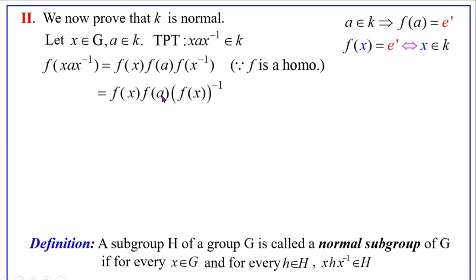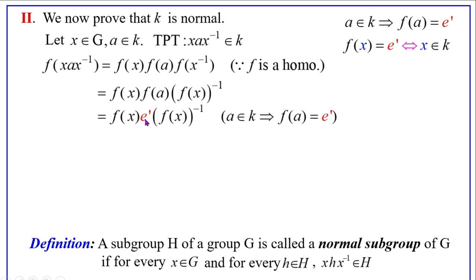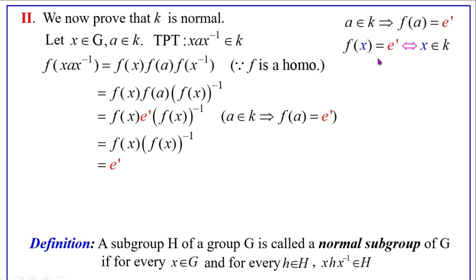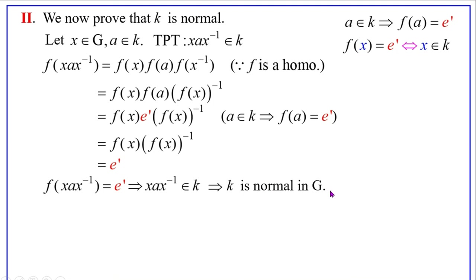Substituting F(A) equals E', we get F(X)·E'·(F(X))⁻¹. Multiplying any element by the identity gives the same element, so this equals F(X)·(F(X))⁻¹, which is of the form A·A⁻¹, which equals the identity E'. Thus F(X·A·X⁻¹) equals E', so X·A·X⁻¹ belongs to K. Therefore K is normal in G.